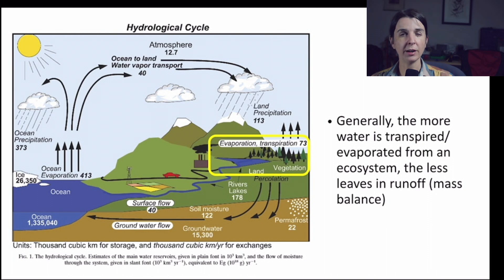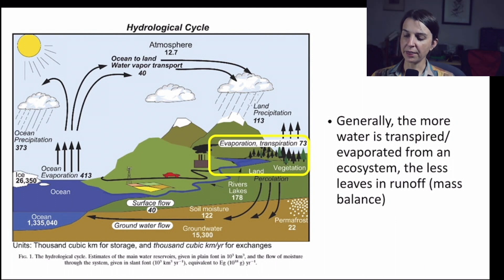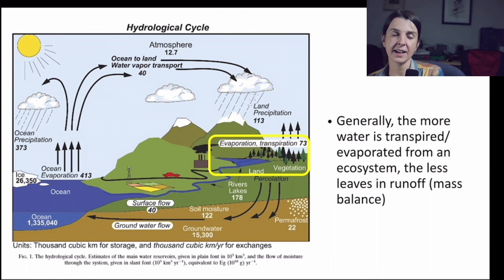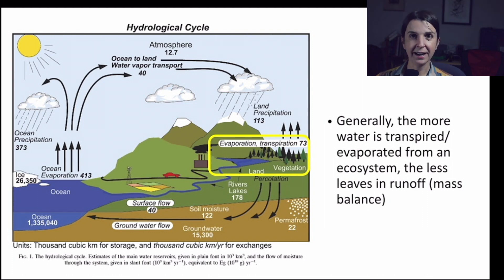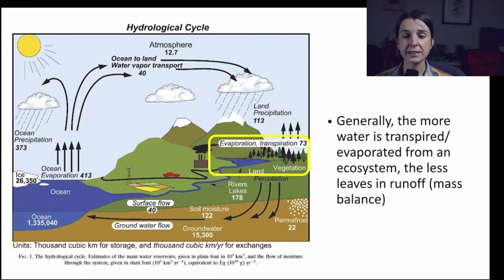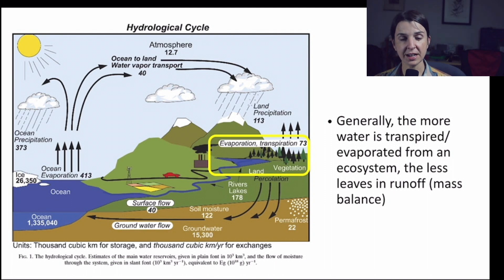If precipitation is approximately equal to evapotranspiration plus runoff — which includes percolation downward into the soil — then the more water that gets evapotranspired, the less is going to leave that ecosystem in runoff. This is just a consequence of mass balance, and it has a lot of consequences we'll talk about in the next lecture. Because we care about how much runoff or transpiration there is, one of the main issues for understanding the water balance of a site is to understand what controls evapotranspiration — how much of the water entering a system through precipitation ends up leaving as evapotranspired water.